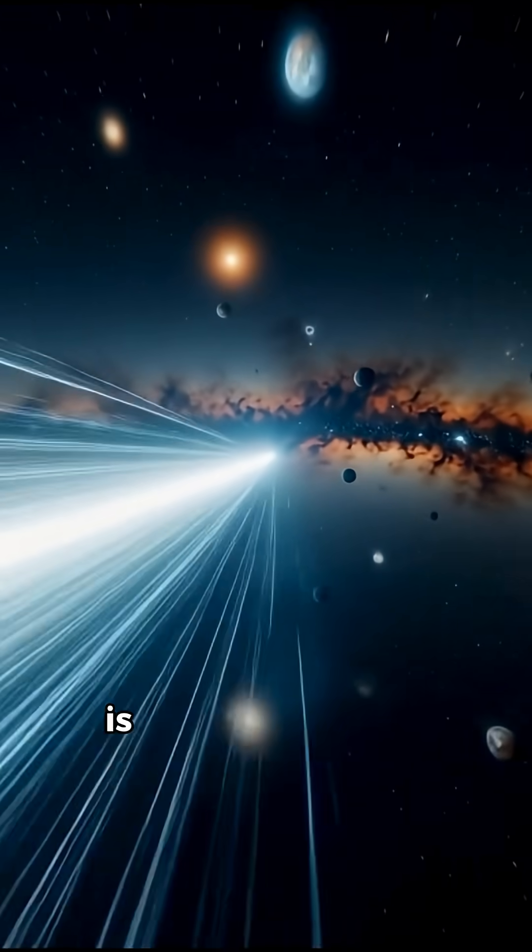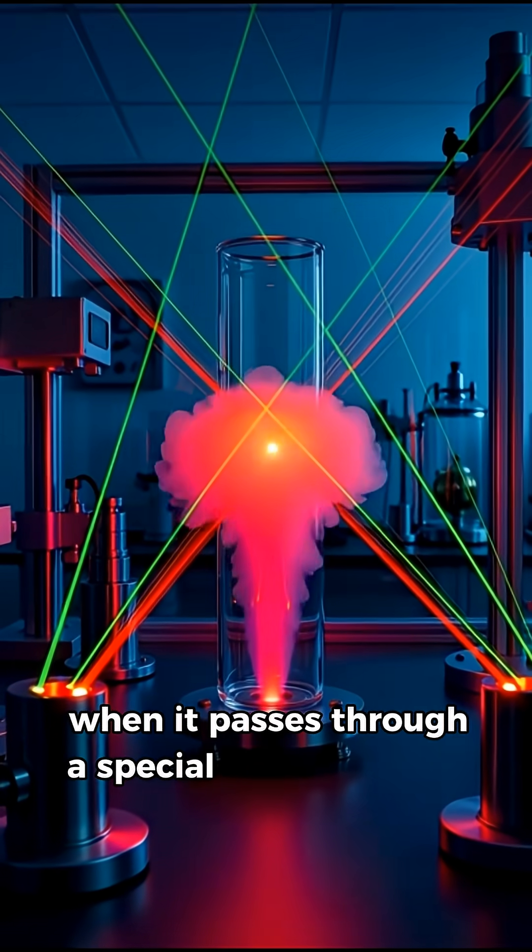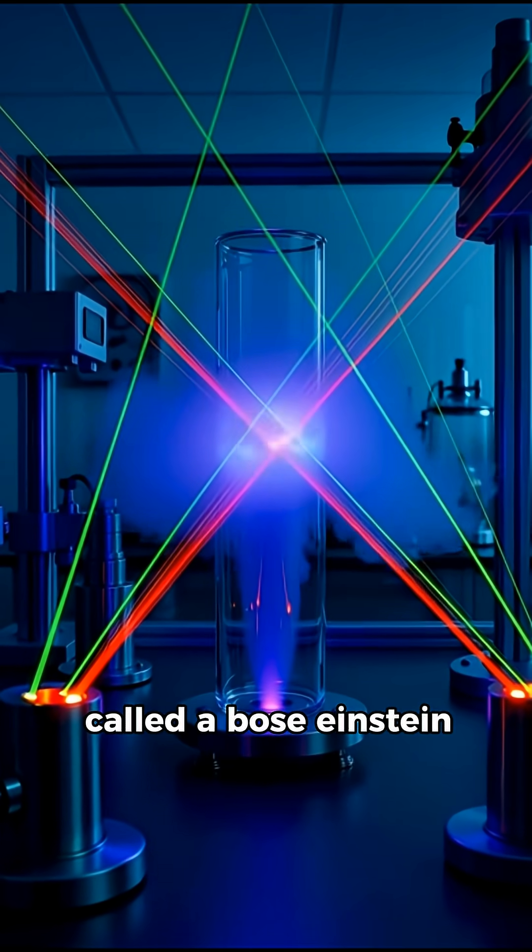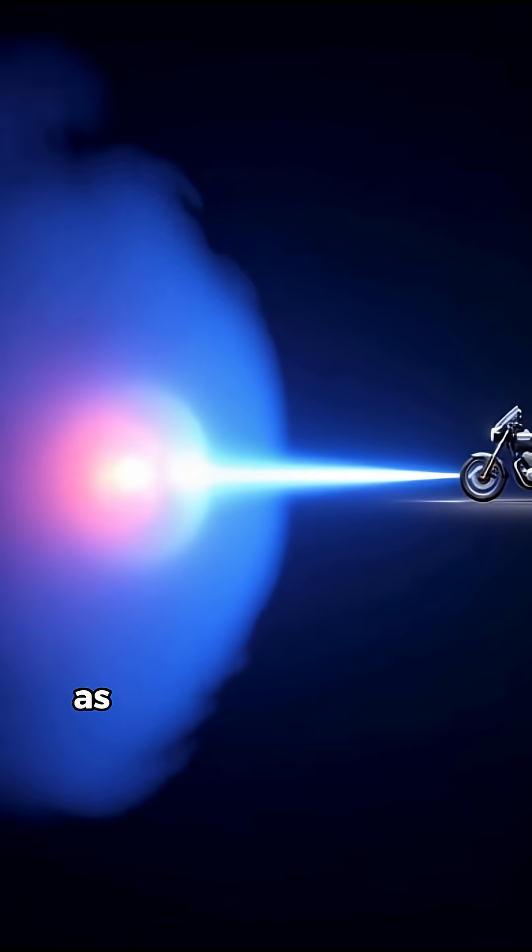You probably know that the speed of light is the fastest in the universe. But did you know that when it passes through a special state of matter called a Bose-Einstein condensate, its speed can drop to just 60 kilometers per hour, as slow as a motorbike?